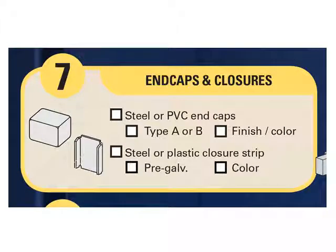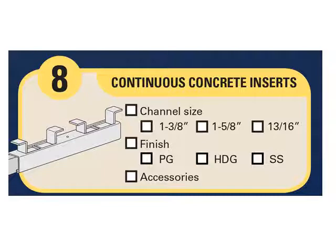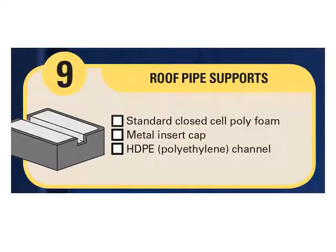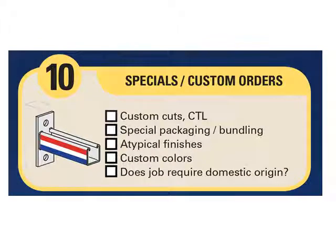Number seven: end caps and enclosures. End caps provide a finished look to a system while covering sharp edges which may present a cut risk. Number eight: continuous concrete inserts. These are uniquely designed to be cast in concrete, principally in ceilings and walls. Once cast in, the strut functions normally for supporting pipe, conduit, cable tray, and strut systems. Number nine: roof pipe supports. Roof support blocks protect commercial and industrial roof membranes from the weight and construction of rooftop strut systems. Number ten: specials and custom orders. G-Strut will customize to specification including custom cut-to-length, custom colors, special fabrication, and packaging.